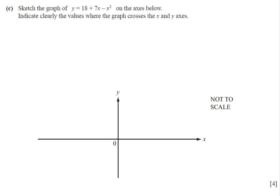This is the final part of question 8 into 2014, part C. In this question, we are asked to sketch the graph of y equals 18 plus 7x minus x squared on the axis below. Indicate clearly the values where the graph crosses the x and y axis.